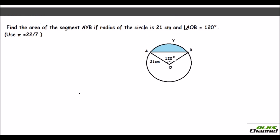Let us do some problems. Find the area of segment AYB (the shaded blue portion), given that the radius of the circle is 21 centimetres, the central angle AOB is 120 degrees, and π = 22/7.